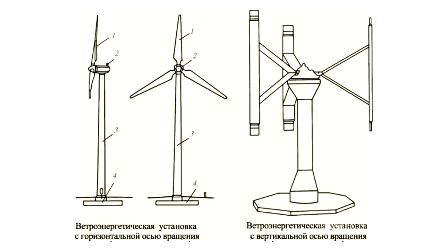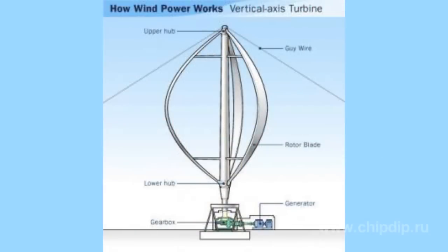There also exists a principally different type – wind power generators with a vertical axis of rotation, which is perpendicular to the air stream. A Frenchman, Georges Darrieus, offered such a rotor in 1931, and now this device is in great demand.